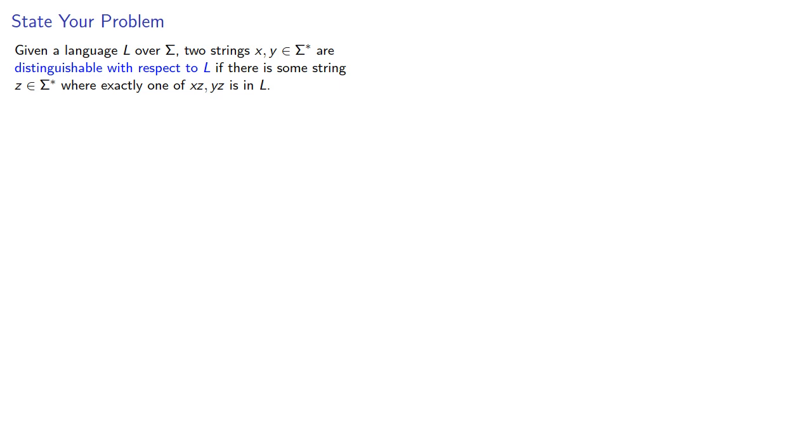Given the language L over sigma, two strings are distinguishable with respect to L if there's some string where exactly one of the concatenations xz or yz is in our language.